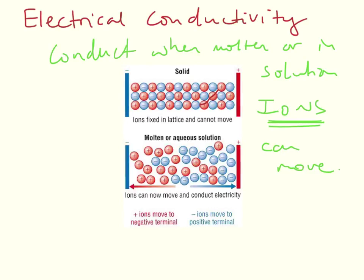It's worth remembering that it's because of the ions being able to move—they're not electrons. Far too often I see students write electrons here, and they should be writing ions. Ionic compounds conduct when molten or in solution because the ions can move.